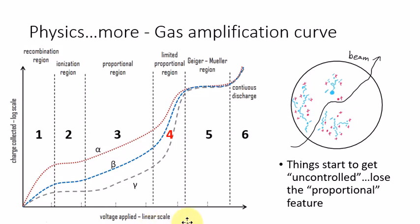So in this graph, the uncontrolled means it transitions from number three region, proportional region, to number four region, which is the limited proportional region.